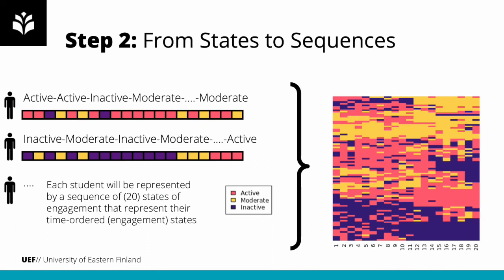In the next step, we build a sequence for each student using the engagement states for each course. This way, a student is represented by a sequence of 20 time-ordered states. In the index plot on the right, we can see an overview of all 89 students across the 20 courses.